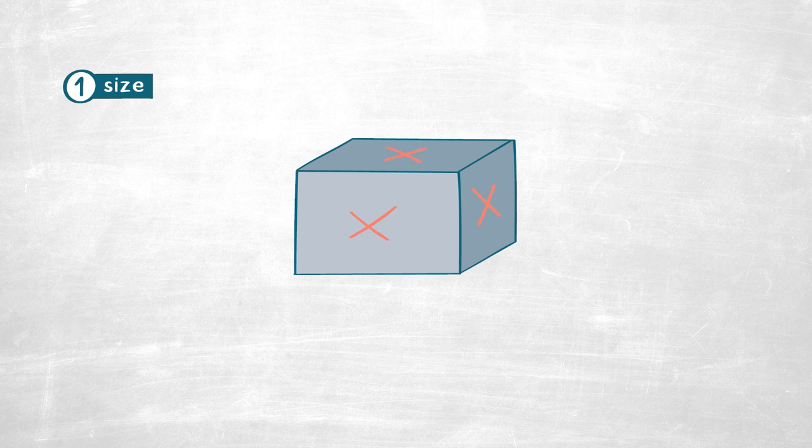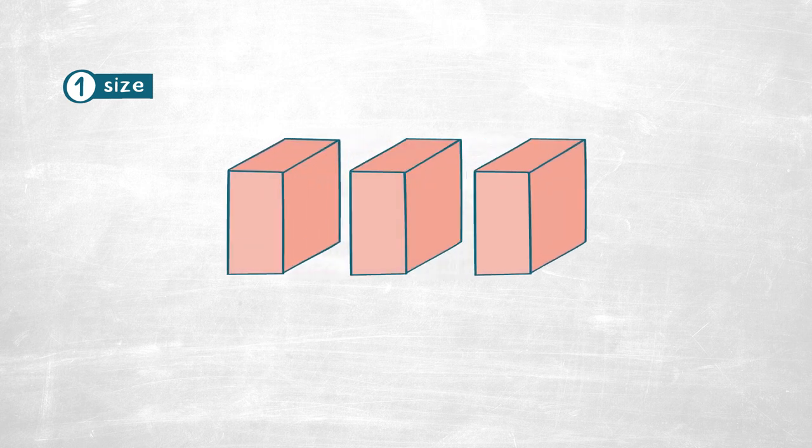So here we can imagine a big block with a certain surface, but if we cut this big block into certain parts, then we'll have more seeds, more grains, more surfaces available where the reaction can be performed.